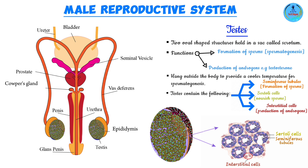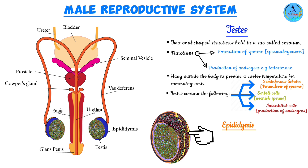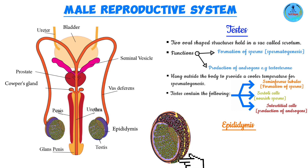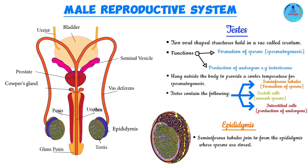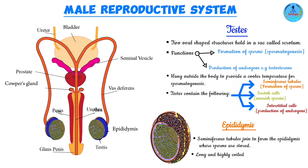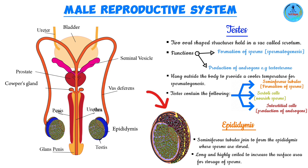The seminiferous tubules join together to form a long and coiled tube known as the epididymis, which is loosely attached to the outer surface of the testes. The function of the epididymis is the storage of sperm — once sperm have been produced by the testes, they proceed to the epididymis where they are temporarily stored. The epididymis consists of highly coiled tubes, and the coiling helps to increase the surface area available for storage of the sperm.